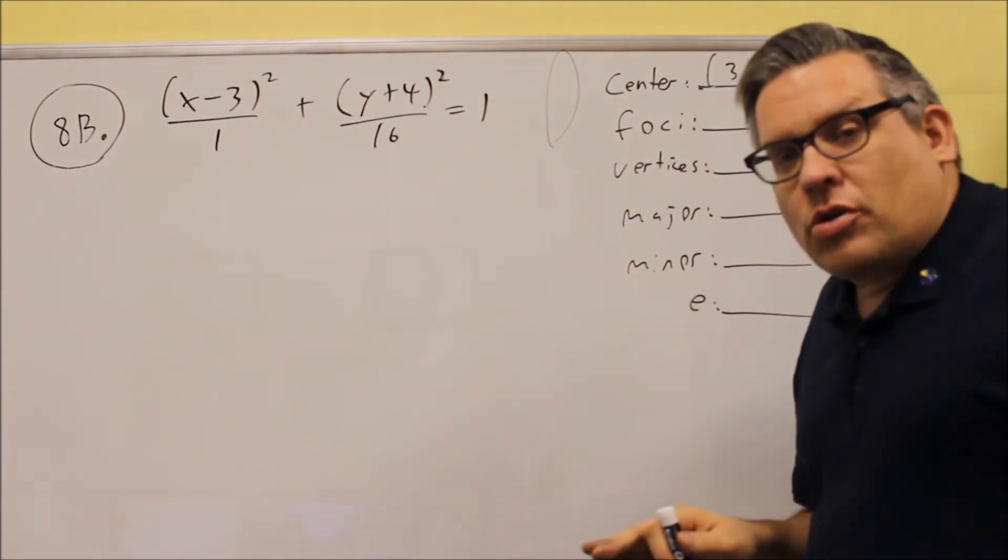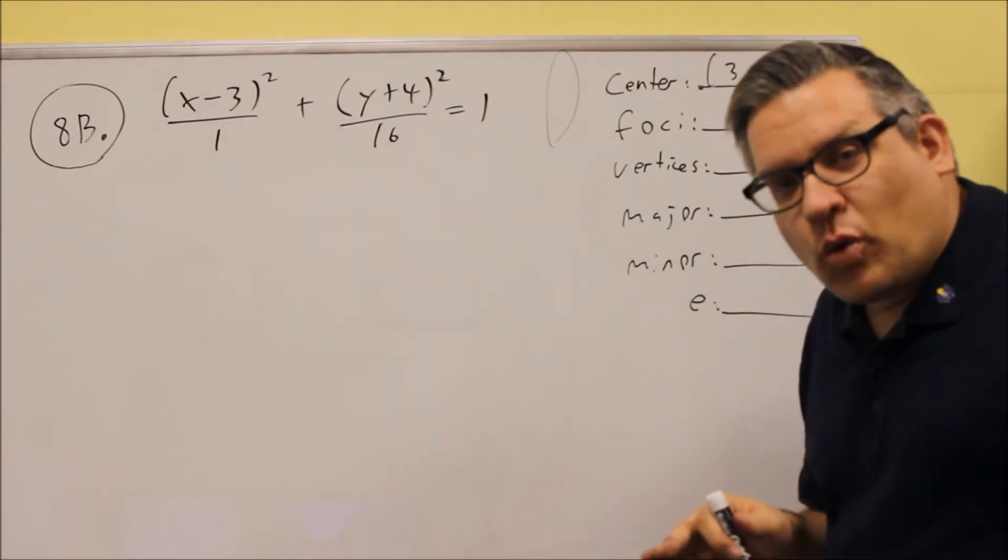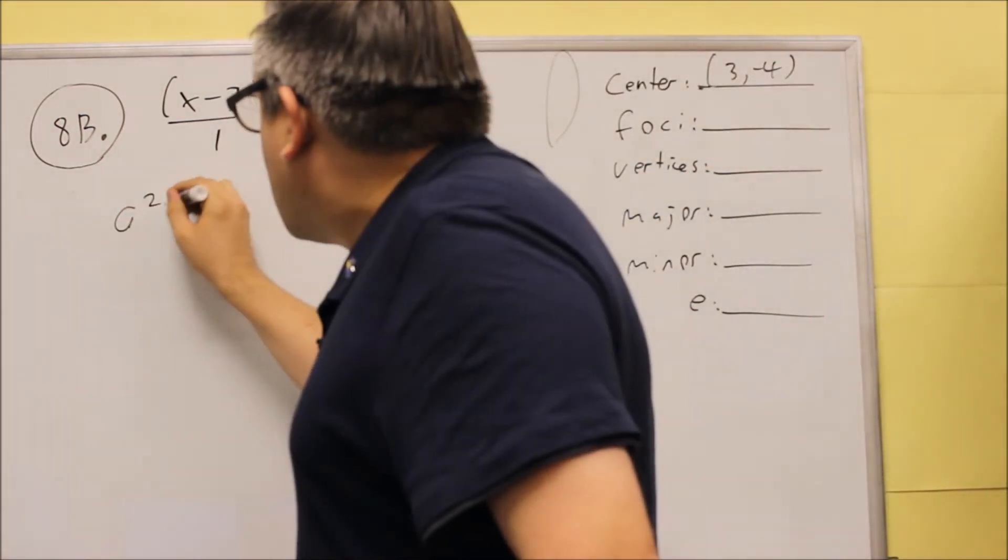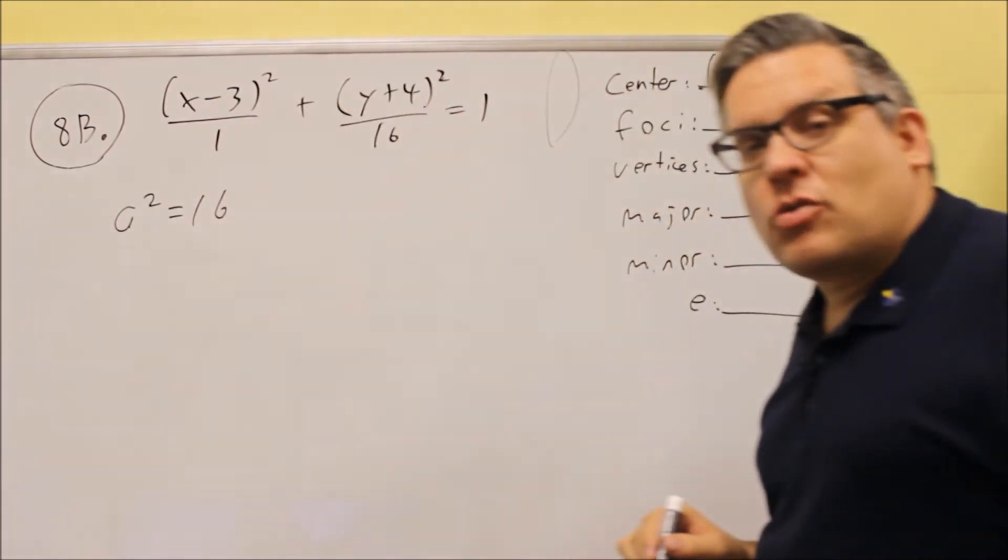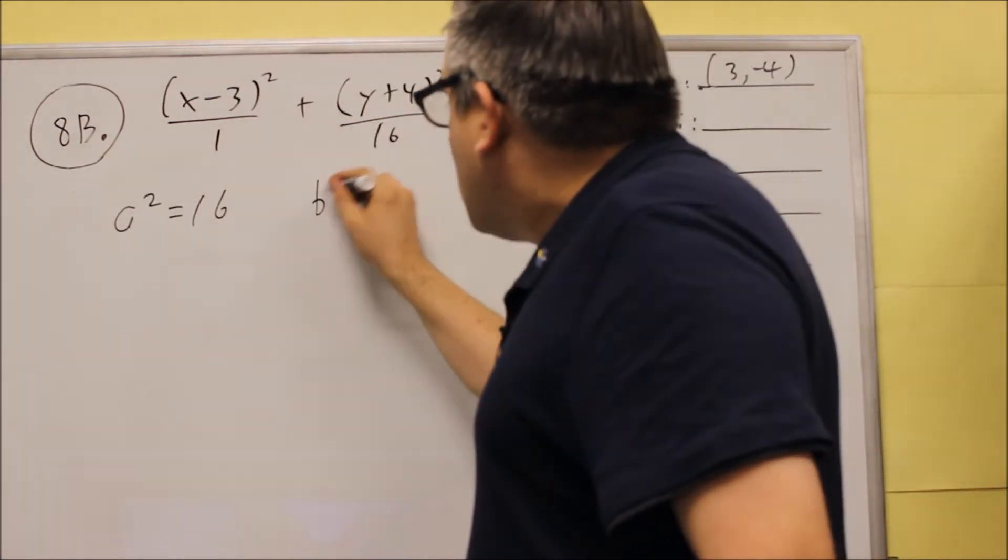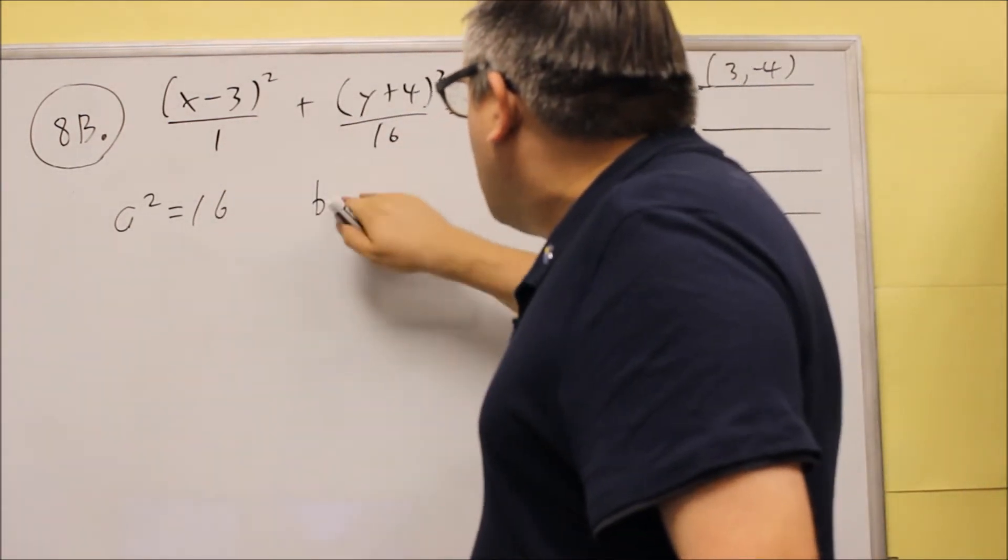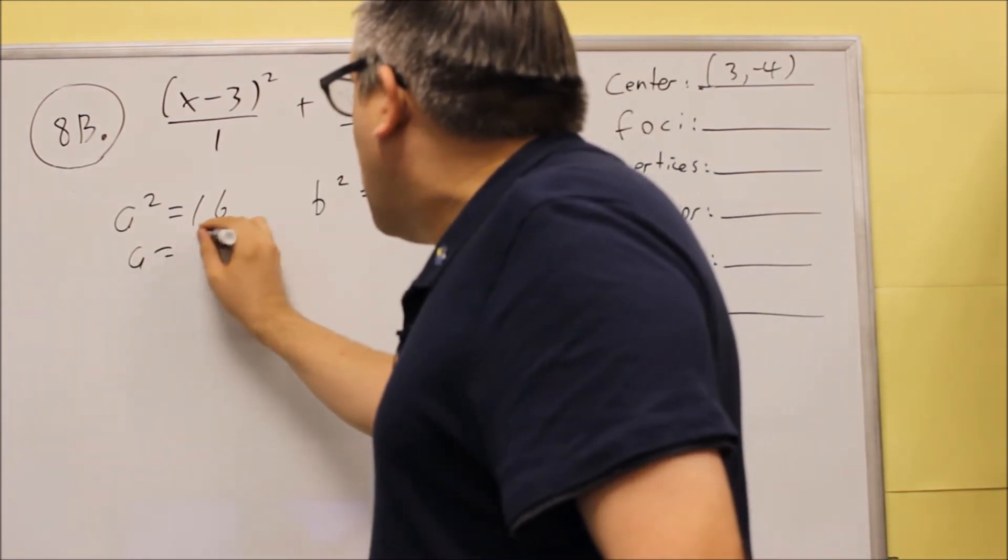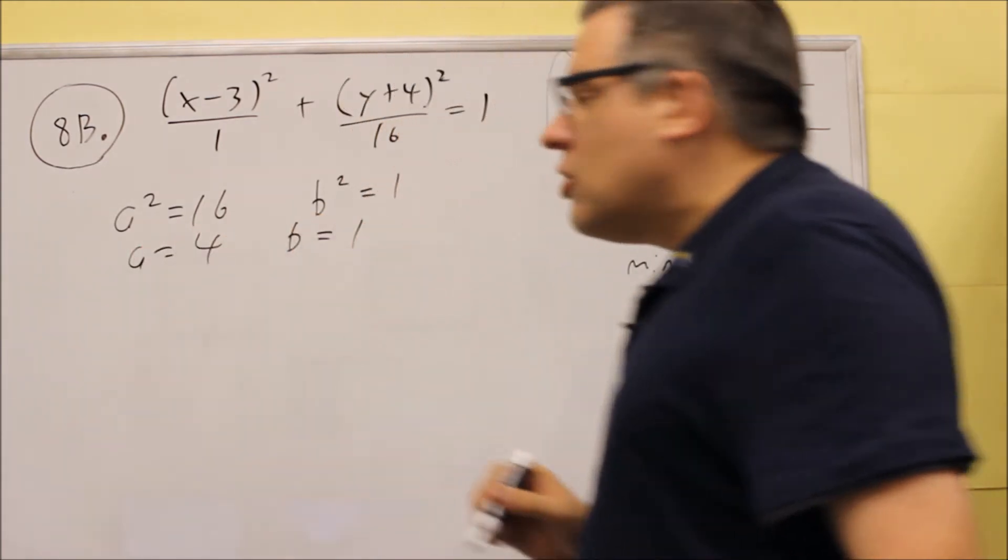The larger number is always the a squared. So this a squared is not equal to 1. A squared is equal to 16 and b squared is equal to 1. Take the square root and you get a is 4 and b is 1.